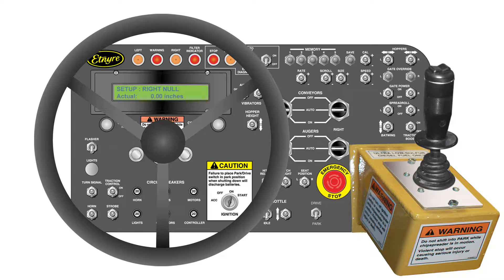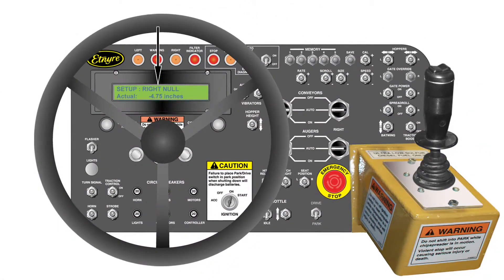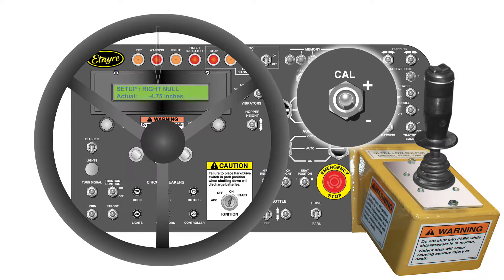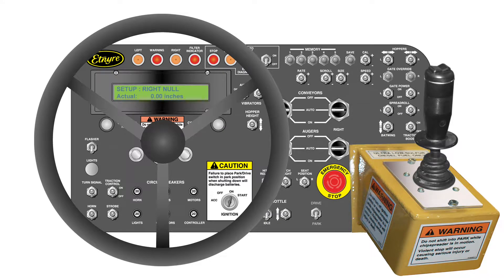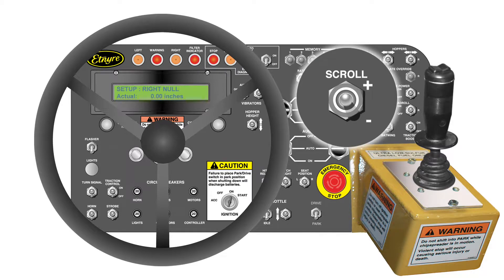This screen is used to set the actual closed position of the right gate. The number will read 0 inches until the right gate override is actually closed. This number should read 0 inches. If this number is not 0, set it to 0 using the cal switch. When it is set to this value, push the scroll switch down to move to the next screen.